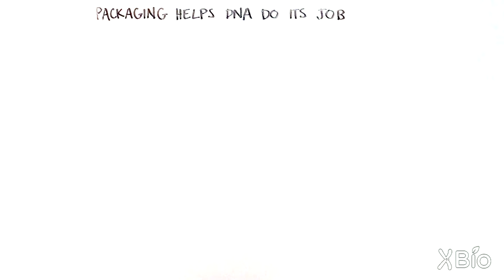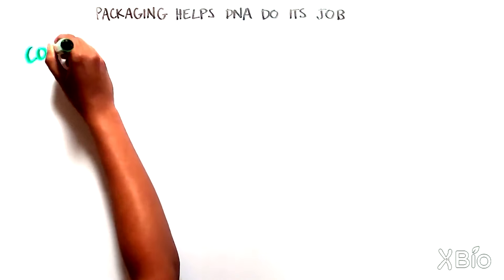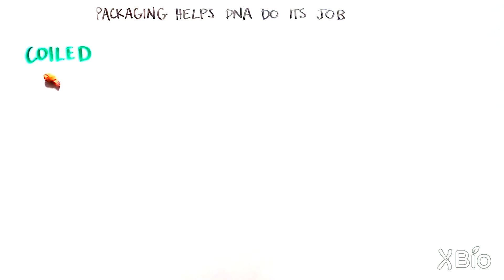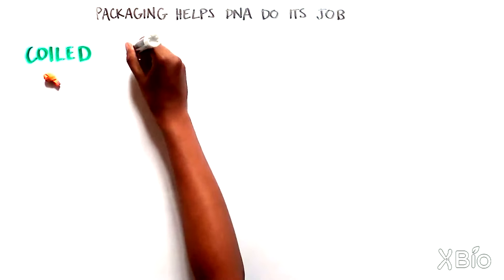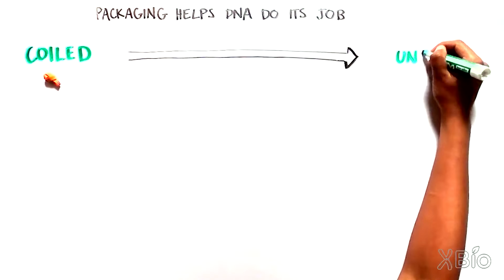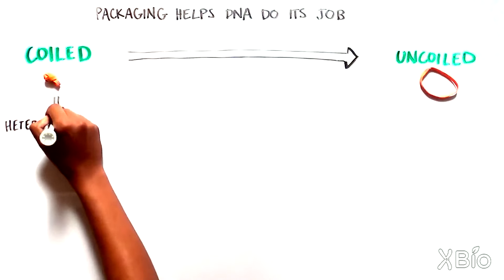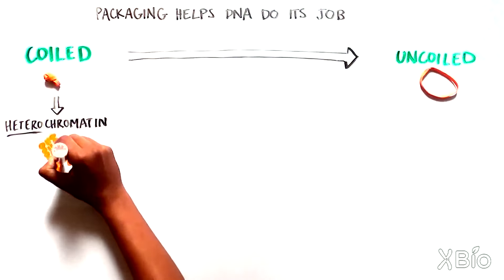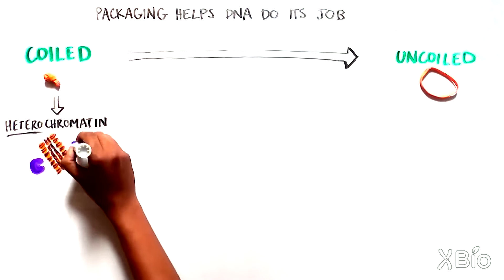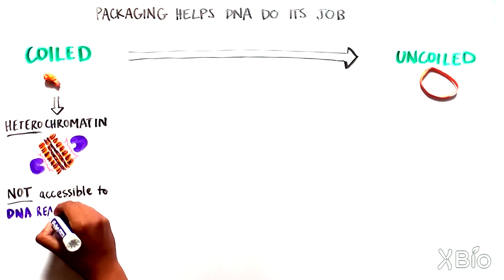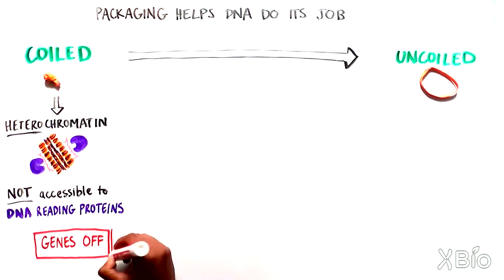Think of it like a coiled-up elastic band. When it is compacted together, no individual strands are accessible, but you can pull away particular pieces of the coiled band as needed. Similarly, when DNA is tightly wound around histones, also called heterochromatin, it isn't accessible to the proteins required to read DNA, so those genes remain turned off.